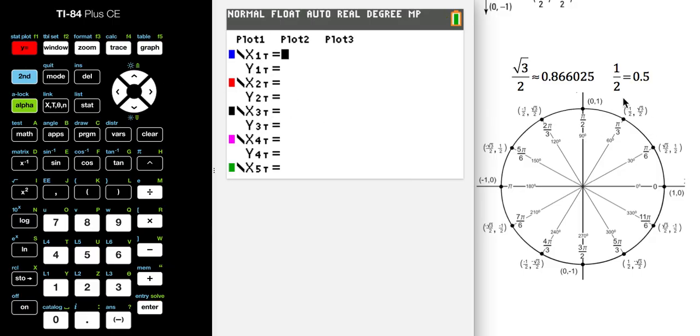Now hopefully you know that in these ordered pairs, the x coordinate represents the cosine and the y coordinate represents the sine. So the x here needs to be cosine, so I'm going to do cosine of t and close that parentheses. And then since the y coordinate is sine, I'm going to set y equal to sine t and close that parentheses.